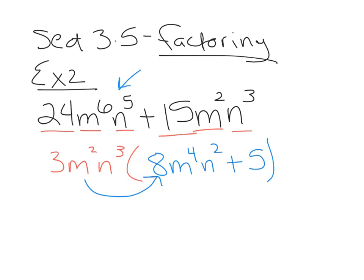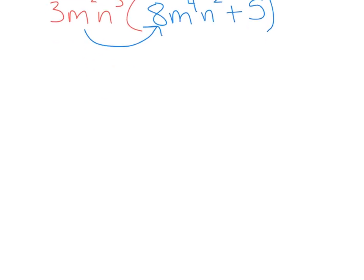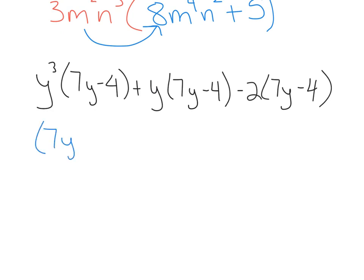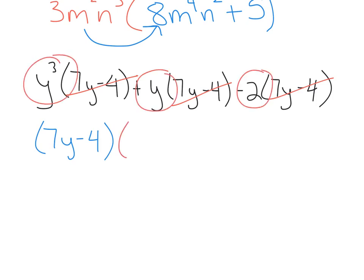The next example is example 5: factor y³(7y−4) + y(7y−4) − 2(7y−4). It is possible for your GCF to actually be a binomial. You can see this binomial 7y−4 is common — it appears in all three terms. So the GCF is the binomial 7y−4. We bring that to the front, and when you factor out a common binomial, you take it out of all three terms. What's left in the parentheses is y³ + y − 2.